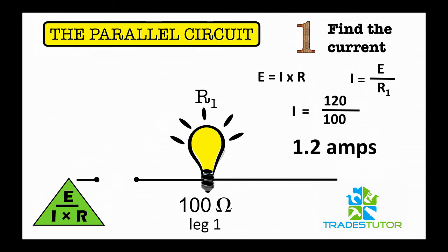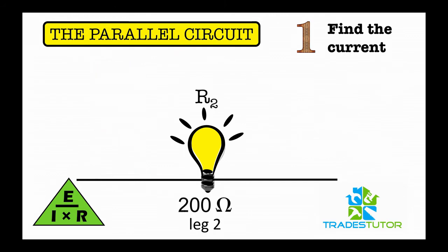So if you were to put the multimeter in series with the resistor, what you'll find is that it will read 1.2 amps. If we try this for leg two of the circuit, or the 200-ohm resistor...